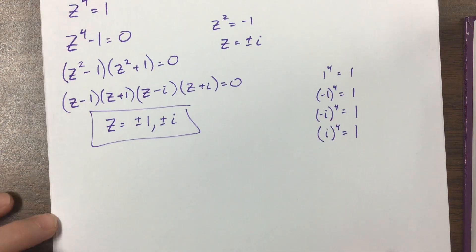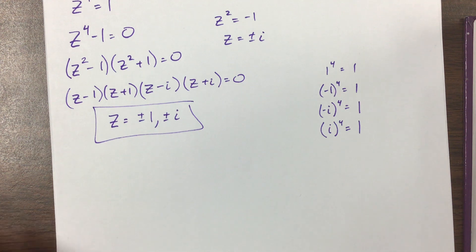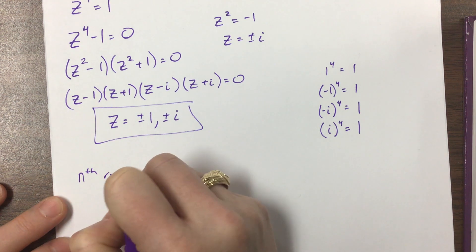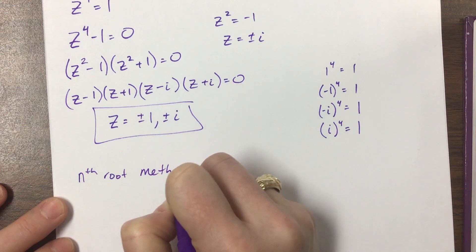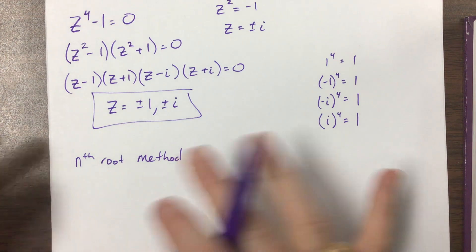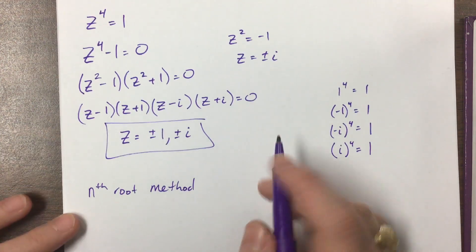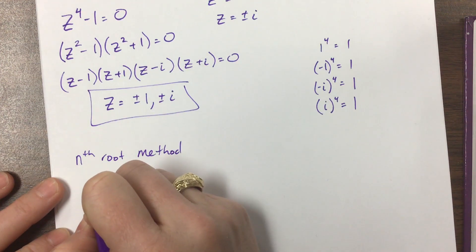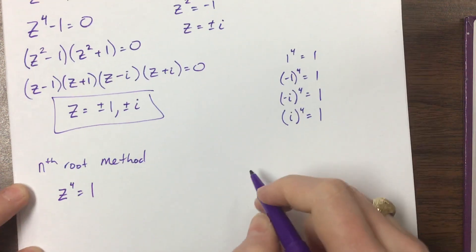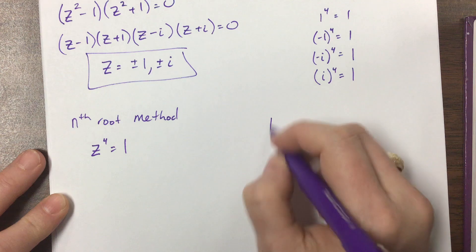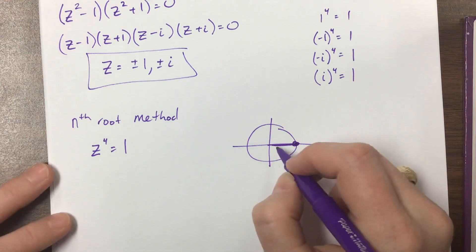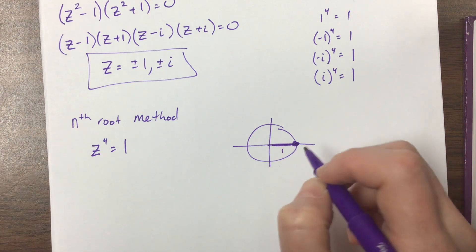We also can use what they call the nth root method. And so in that case, what we've got here is we can use De Moivre's theorem in kind of a different way. So if we've got z to the fourth is equal to 1. Well, if you think on the unit circle, 1 is over here, that's just 1, cis, 0.